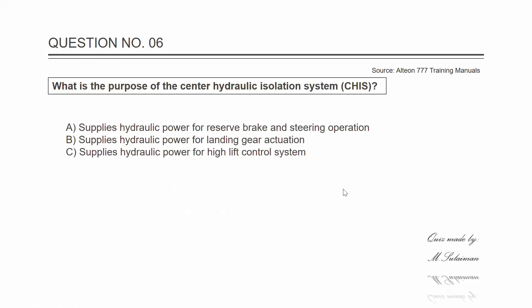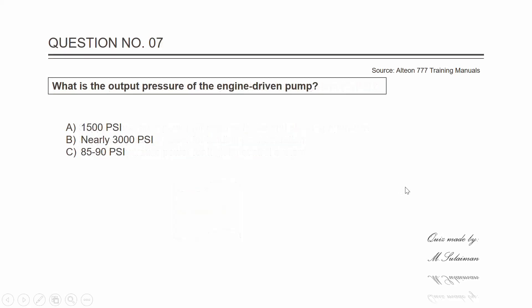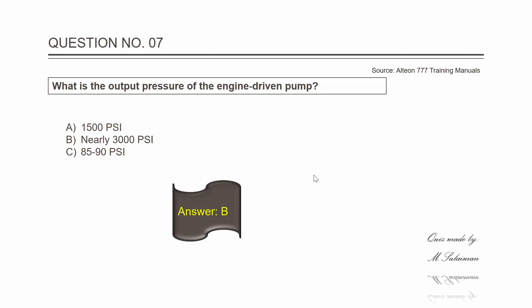Question six: what is the purpose of the central hydraulic isolation system? The answer is A — it supplies hydraulic power for reserve brake and steering operation. Question number seven: what is the output pressure of the engine driven pump? The answer is B — approximately 3,000 PSI.